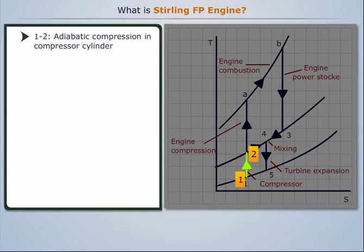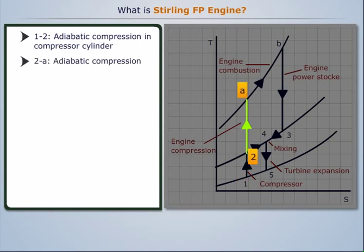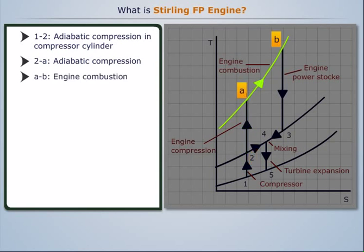Process 1-2 shows adiabatic compression in the compressor cylinder. Process 2-A shows adiabatic compression. From A to B there is engine combustion.